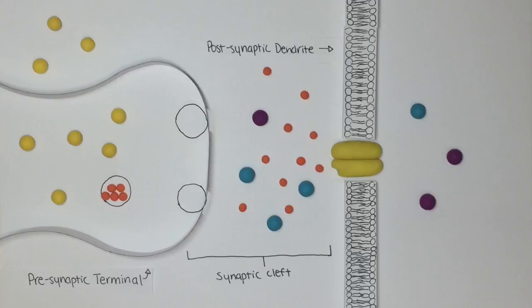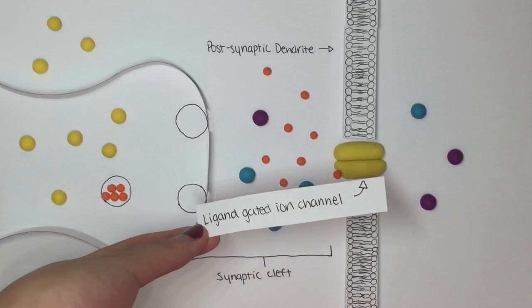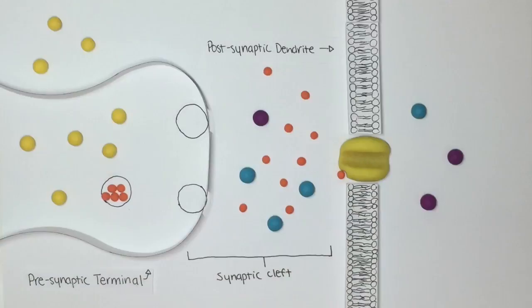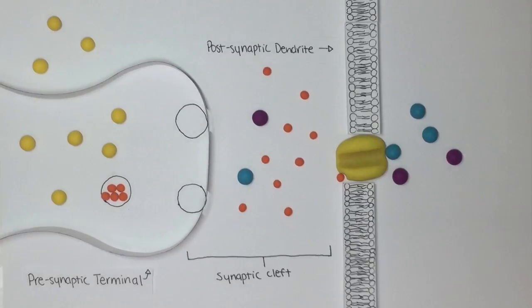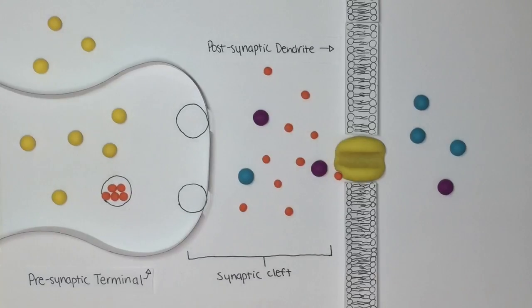These neurotransmitters bind to ligand-gated ion channels and cause them to open, allowing sodium to enter the cell and potassium to leave, once again depolarizing the region. And if depolarization crosses the threshold, an action potential is generated and the message continues being propagated.